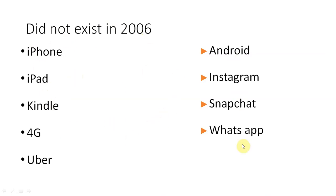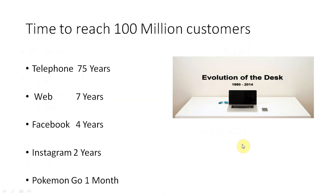The telephone took 75 years to reach 100 million customers. The web took 7 years. Facebook took 4 years. Instagram took 2 years. Meanwhile, games like Pokémon GO or PUBG reached 100 million customers within a month or even some days. This shows the speed of technology and how fast we are moving.